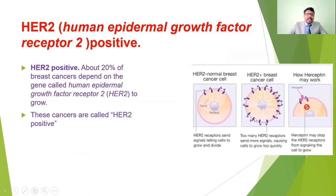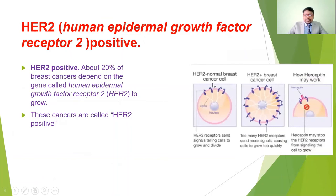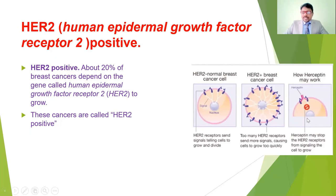HER2-positive (human epidermal growth factor receptor 2 positive) breast cancer involves abnormal growth factor signaling. These growth factor receptors give excessive signals, causing cells to grow more quickly. Herceptin is used to inhibit this abnormal hormonal development. If uncontrolled, these HER2-positive signals lead to breast cancer.